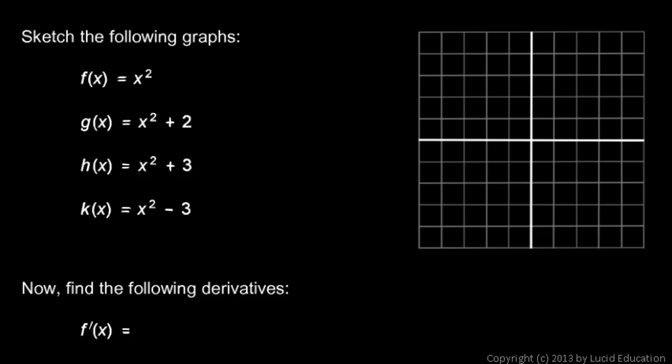Now, follow this set of examples here. We're told to sketch the following graphs. First there's f(x) = x², so that's pretty easy—goes through (0,0), (1,1), (2,4), and a mirror image of that over here on this side. So that's a graph of x².